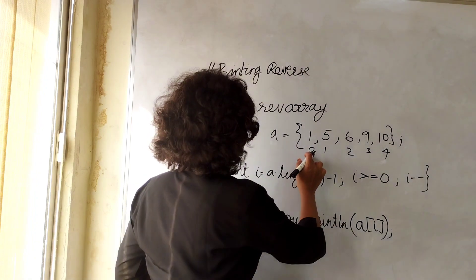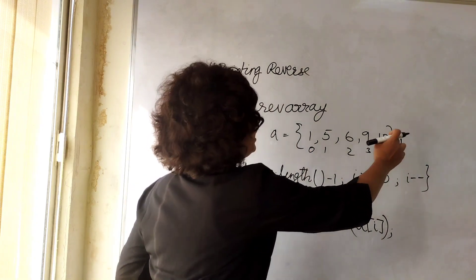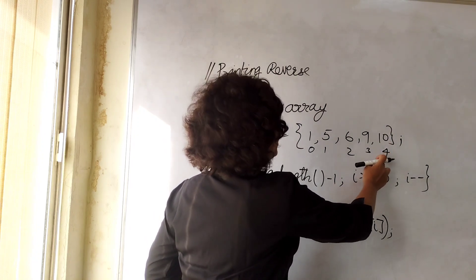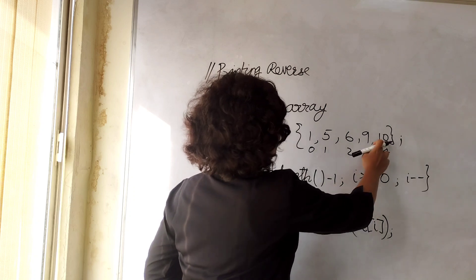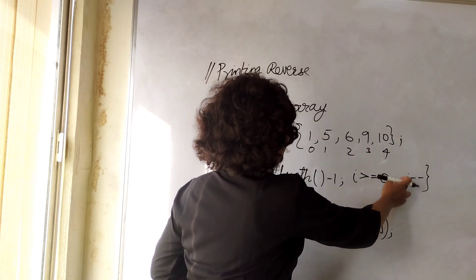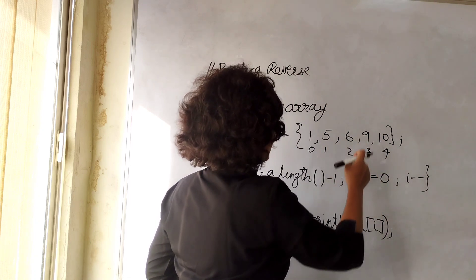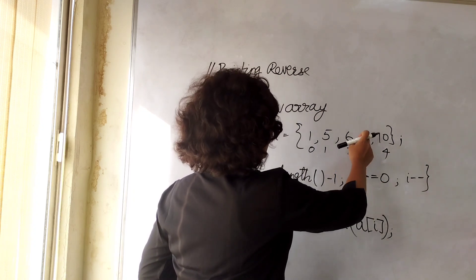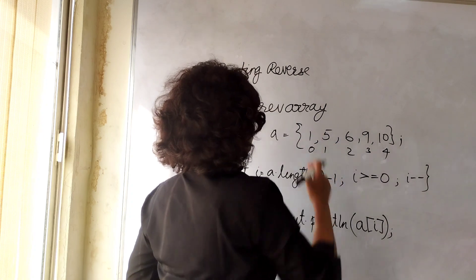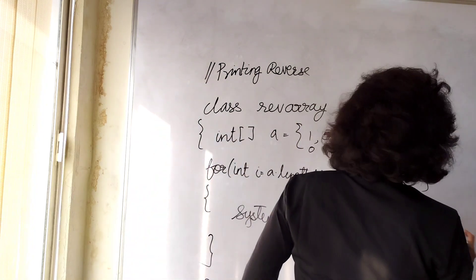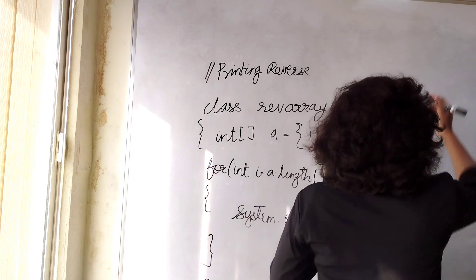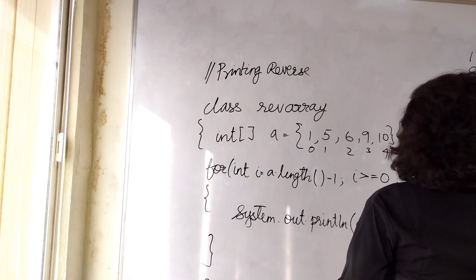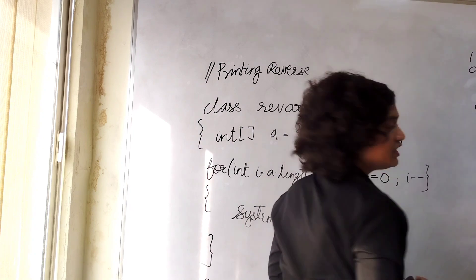First when i is equals to 4, 10 will be printed. It will check the condition: i is greater than or equal to 0, 4 is greater than or equal to 0. So 10 will be printed, then i will reduce, i will become 3, then the condition will be true. So it will print 10, 9, 6, 5 and 1. The output of this program will be like this.